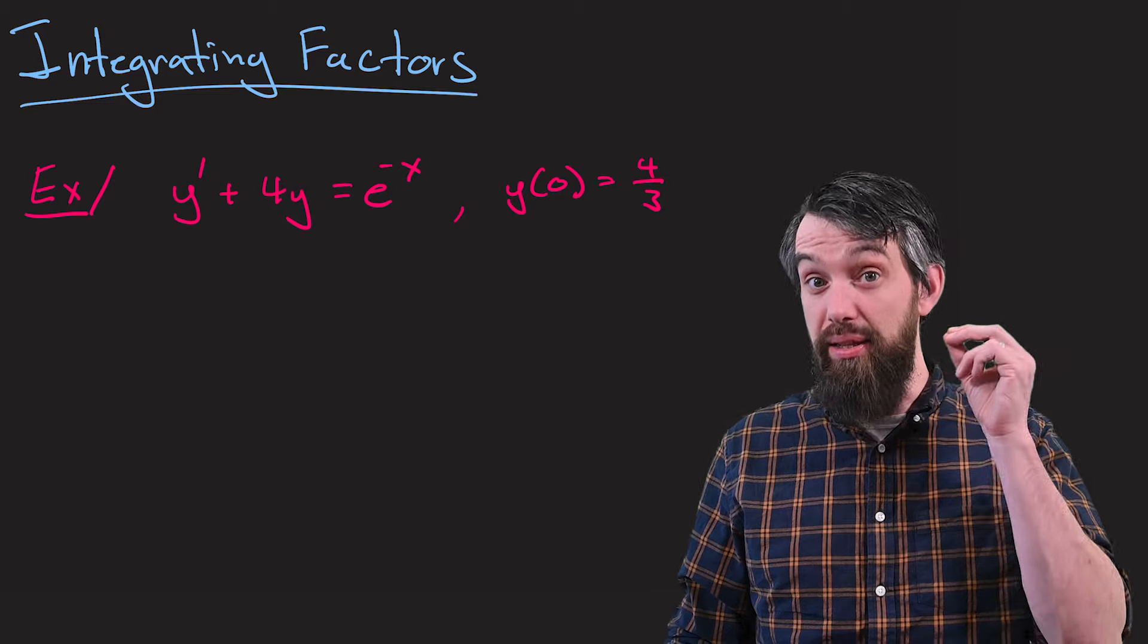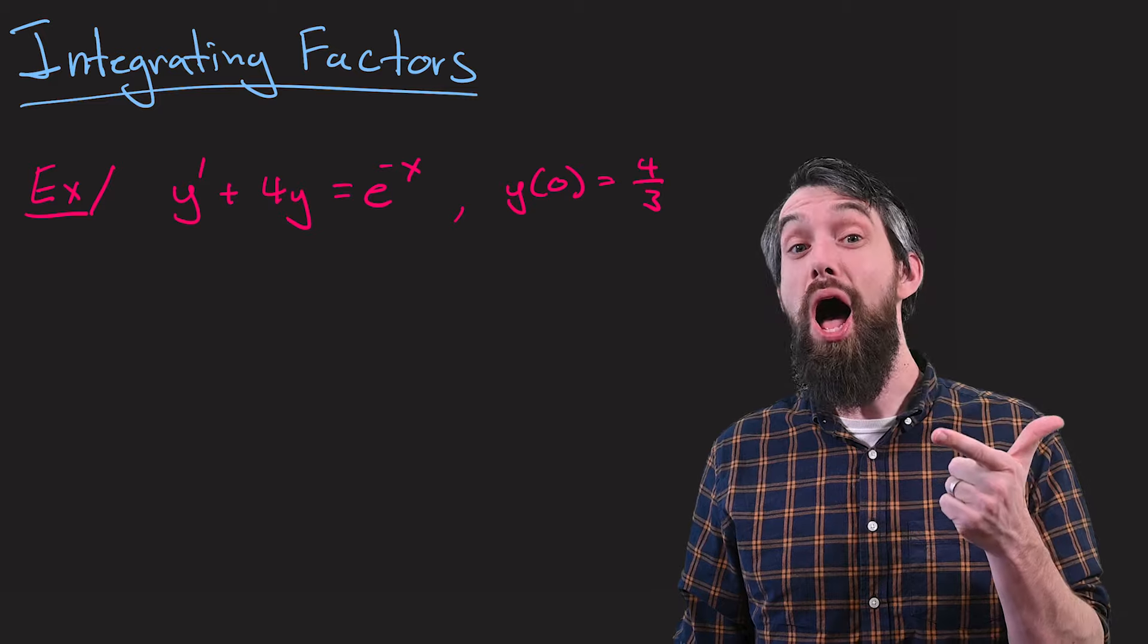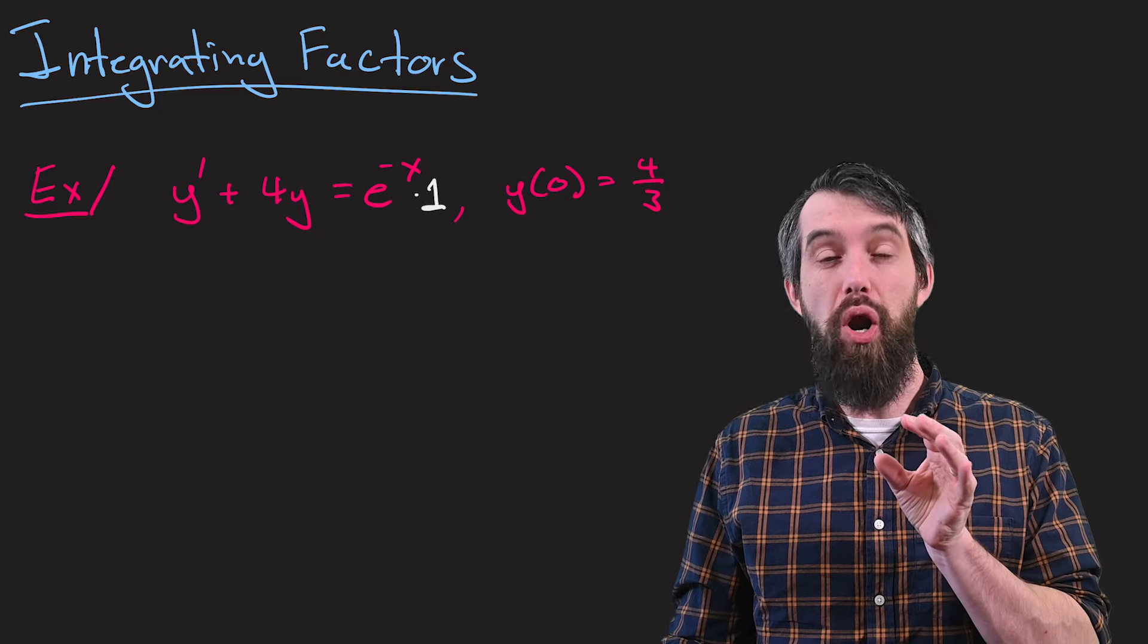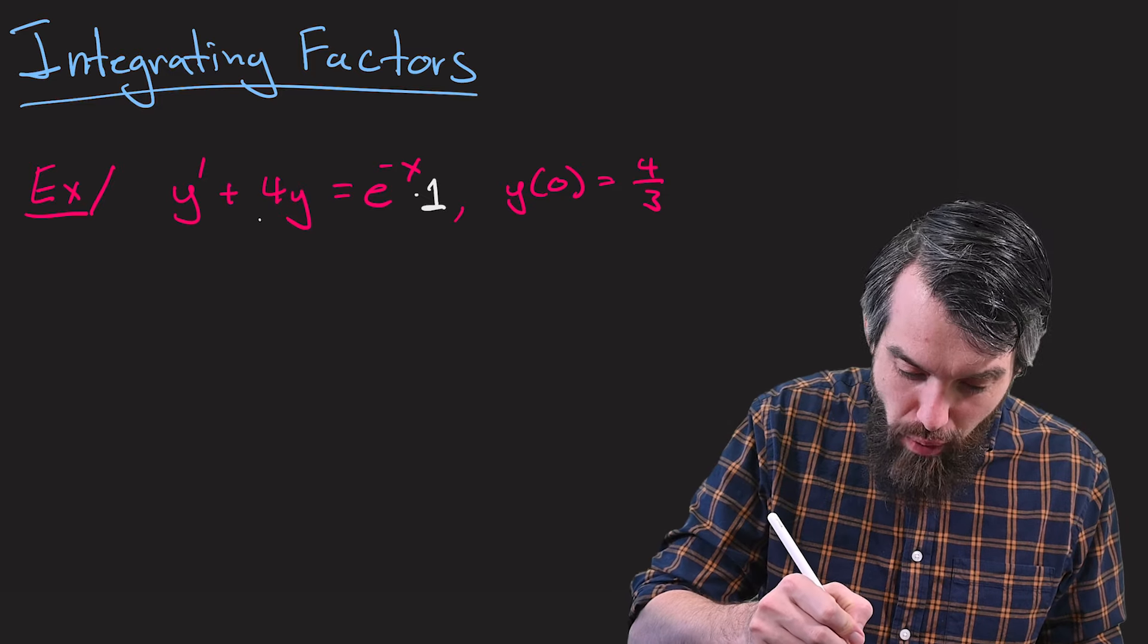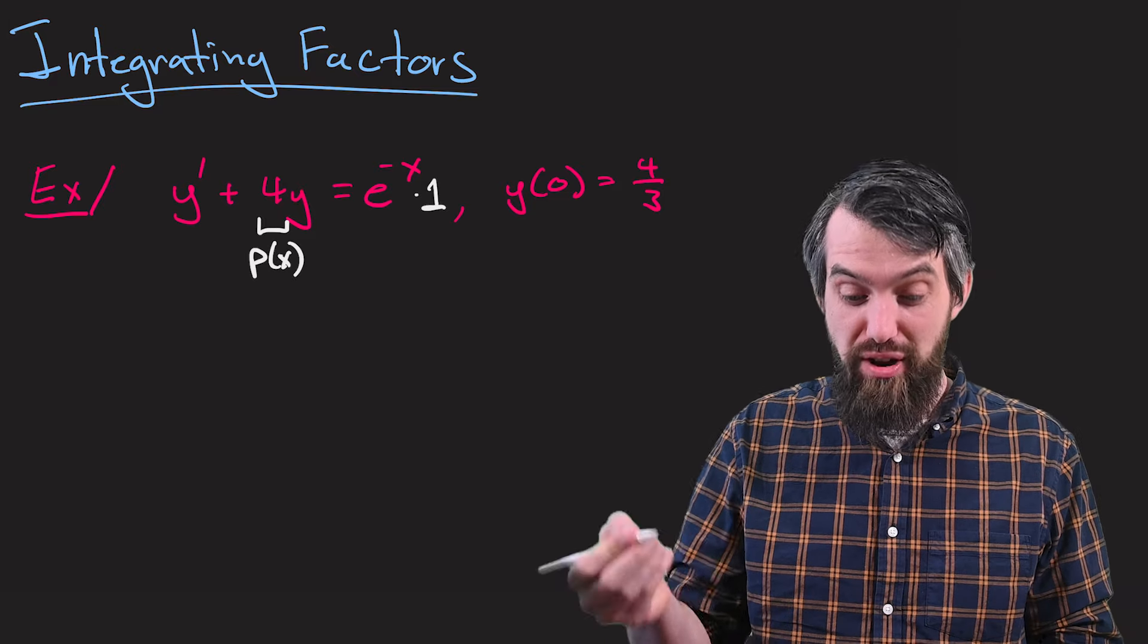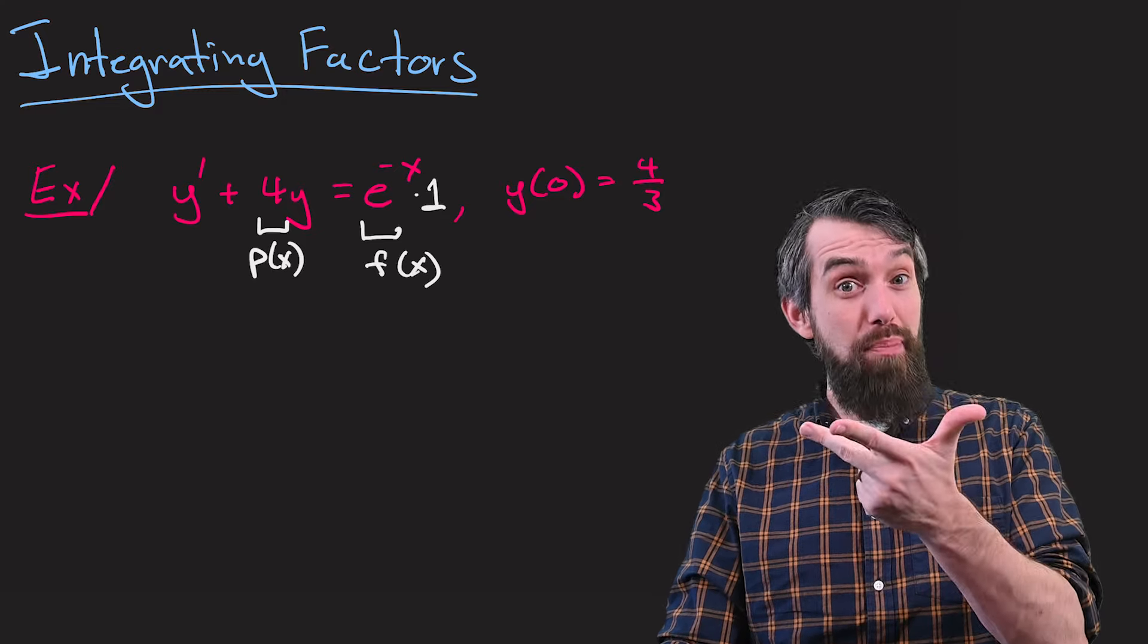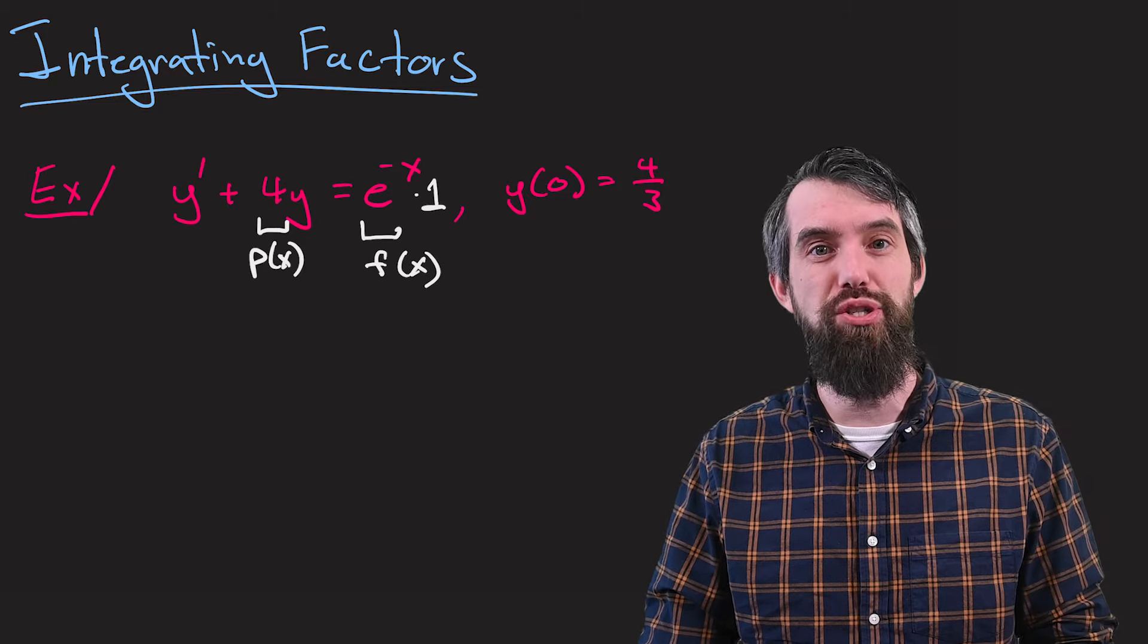Now, the reason this is a linear first-order equation is because the coefficient of y prime, the coefficient of y, and the coefficient of 1 on the right-hand side—the coefficients of all three of those are just some function of x. And indeed, this is in standard form, and the coefficient function of y is typically called p(x), and the coefficient function of the 1 is referred to as f(x). The 1, the y, and the y prime all are to the power of 1 with coefficients, and those coefficients are some functions of x.